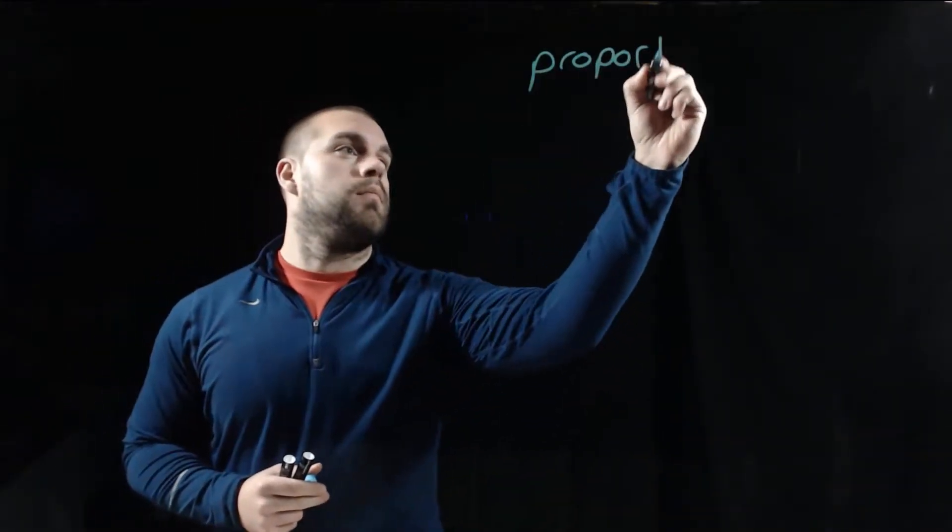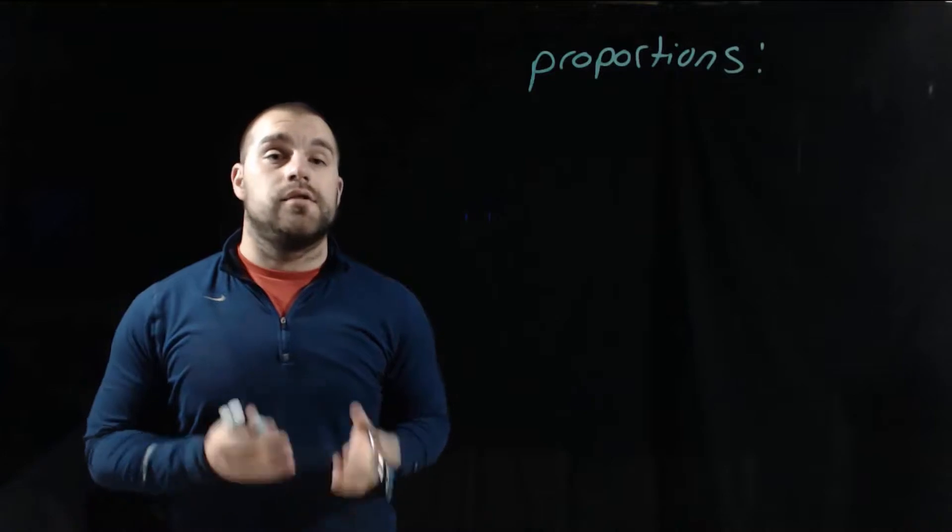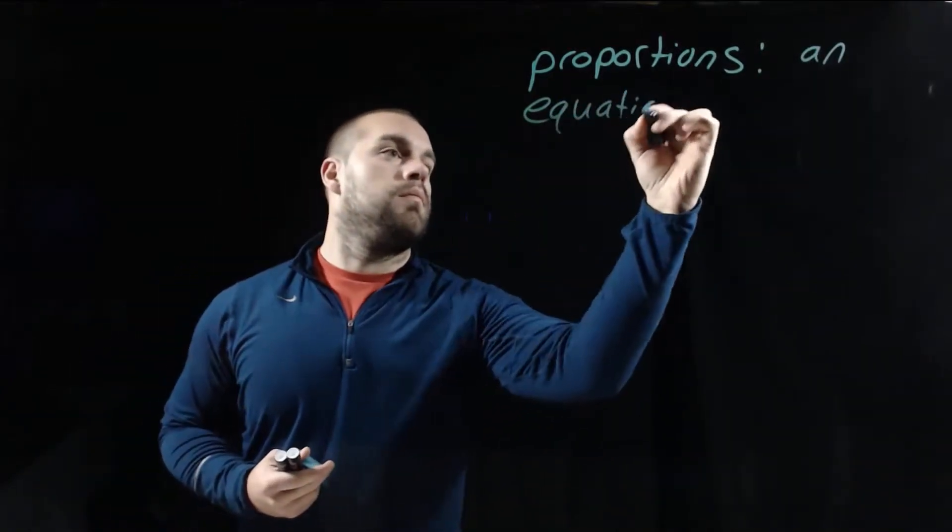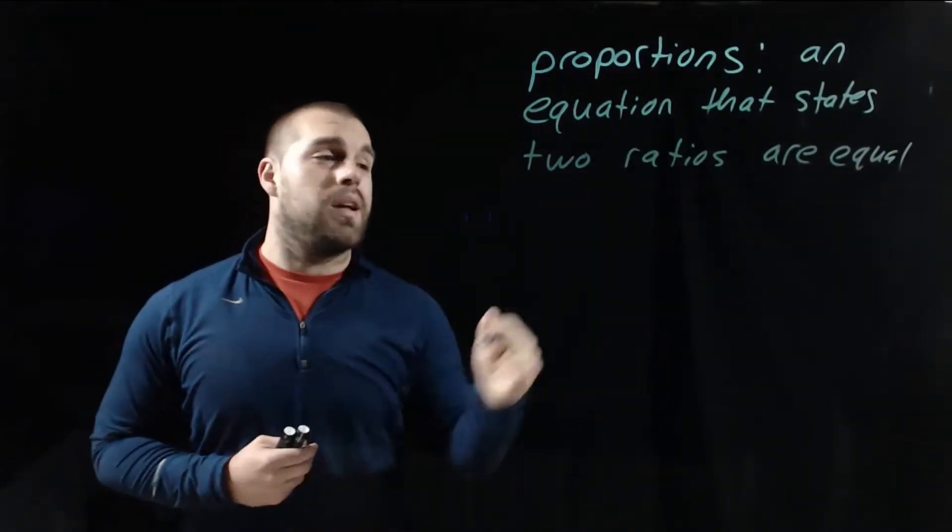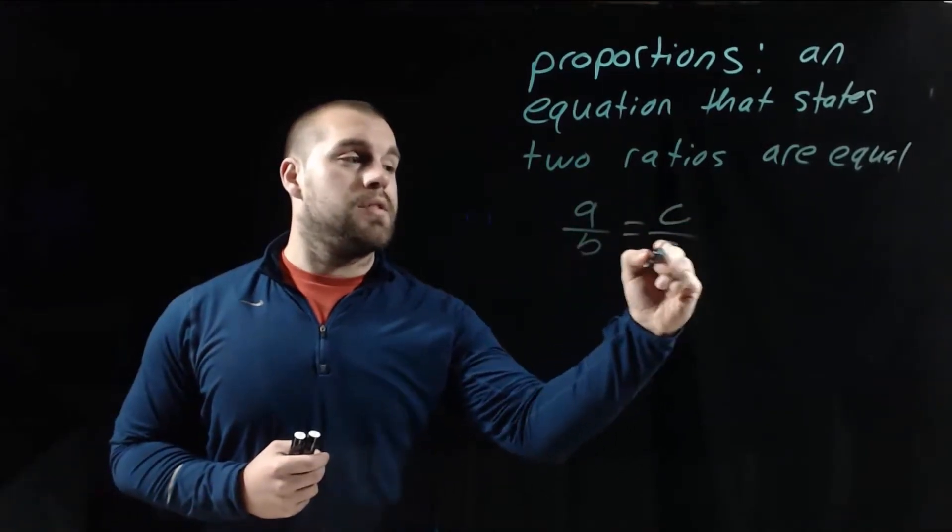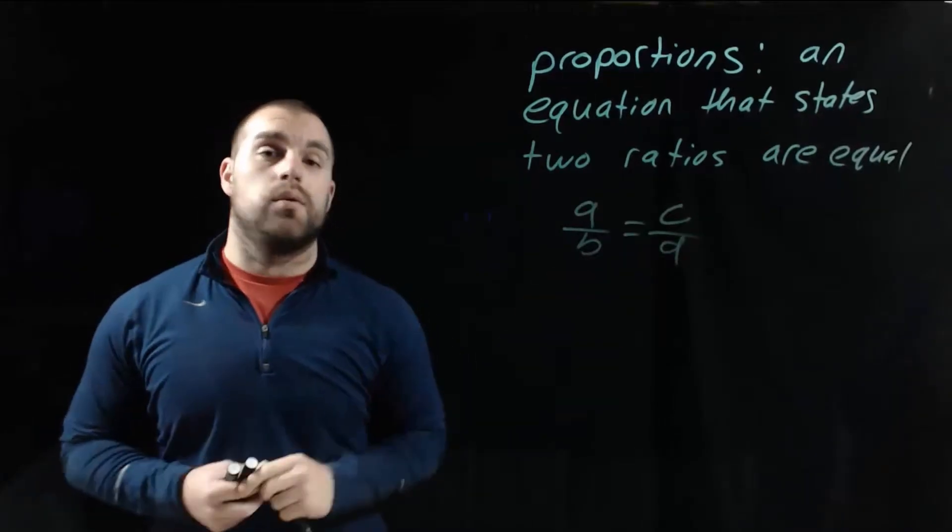Now, if we take that the next step further, we're going to start dealing with proportions. What a proportion is, is it's an equation that says two ratios are equal to each other. The way we write that out is a over b equals c over d. So we've got two fractions, two ratios that are equal to each other.